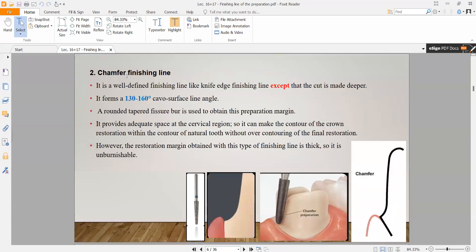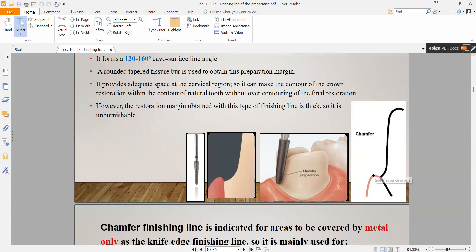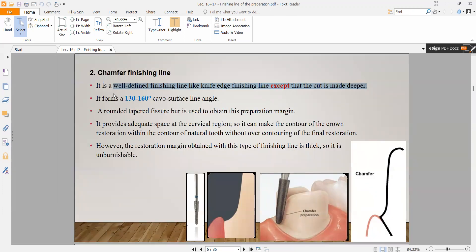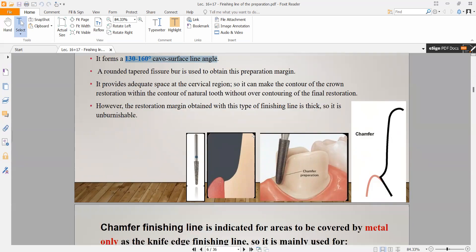Chamfer is a well-defined finishing line like knife edge, except that the cut is made deeper. It's similar to knife edge to a large extent, but we cut it deeper. So it's less conservative - we take a larger amount from the tooth. The cavosurface angle is from 130 to 160 degrees.